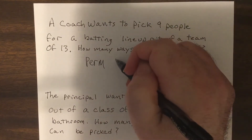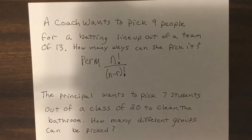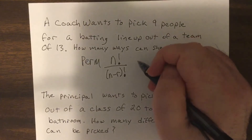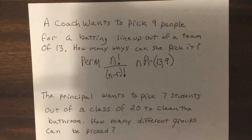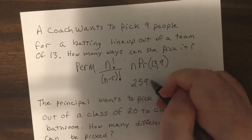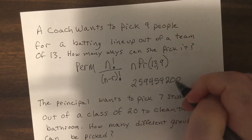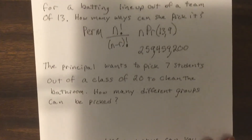A permutation is n factorial divided by (n minus r) factorial. So with n=13 and r=9, using the calculator — it comes out to 259,459,200. So there are over 259 million possible batting lineups.